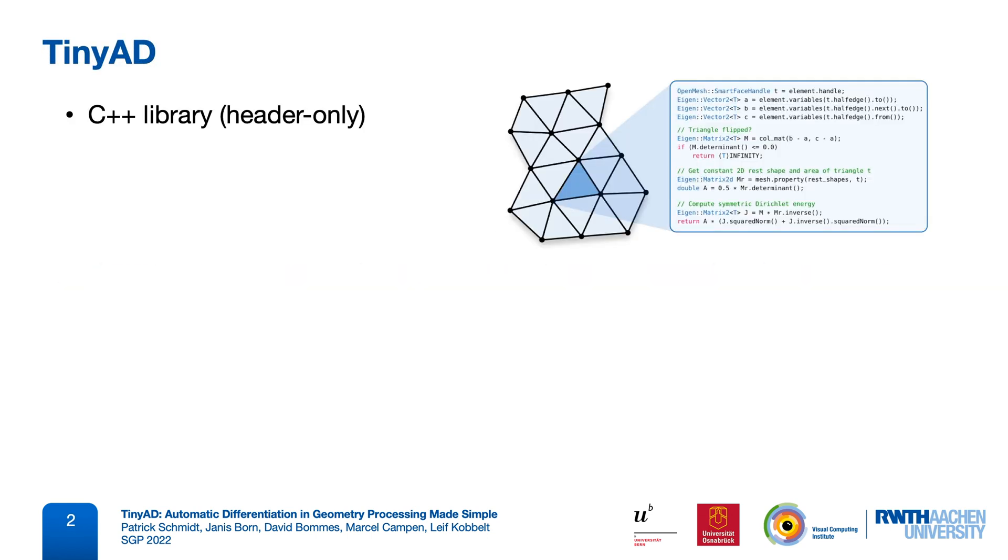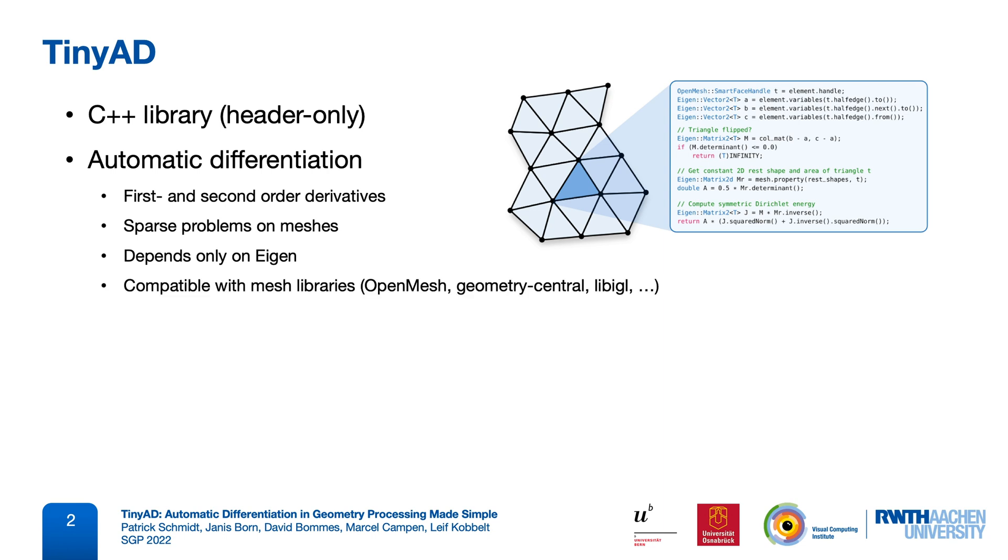TinyAD is a small C++ library for automatic differentiation, targeted specifically at geometry processing. It computes first- and second-order derivatives, in particular of sparse problems on meshes, by differentiating small subproblems. TinyAD only depends on the Eigen matrix library and is compatible with many different mesh libraries.